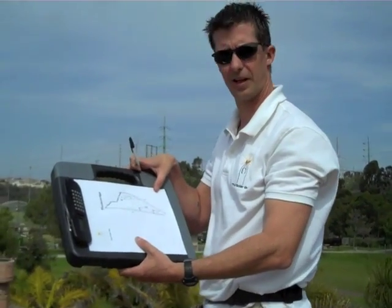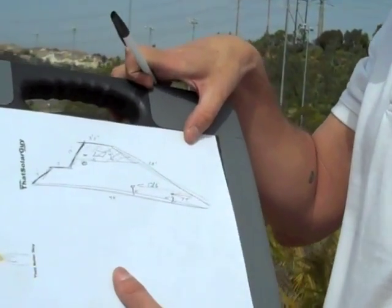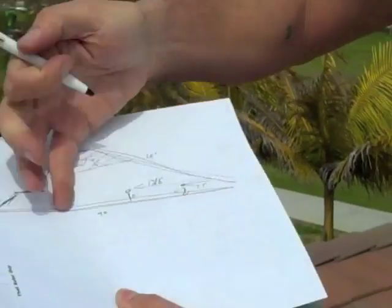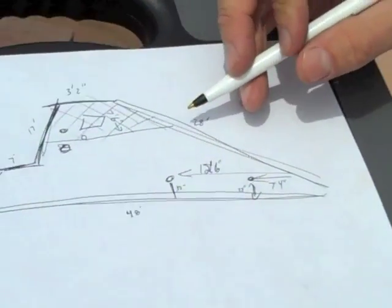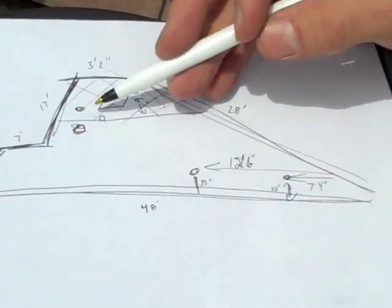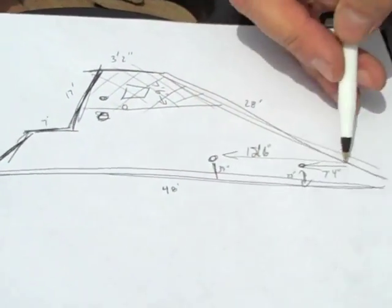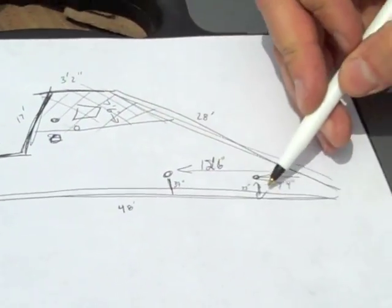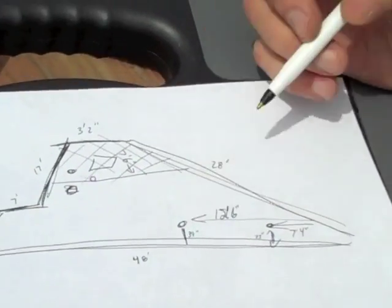So this is basically how to do a sketch of the roof — we've got the whole perimeter sketched out, dimensions, and then all our little obstructions, we have dimensions from left to right and bottom to top.